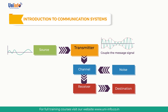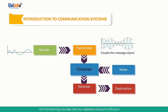The channel includes the transmission medium and it may introduce noise and distortion. Examples of channels are coaxial cable, twisted wire, optical fiber, or the free space between transmitting and receiving radio antennas.